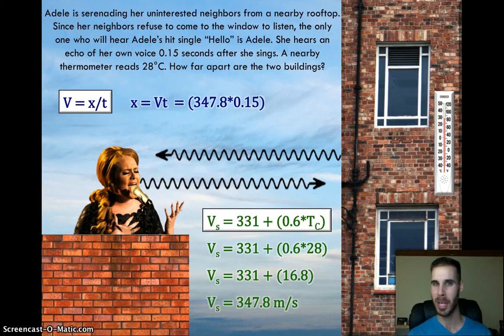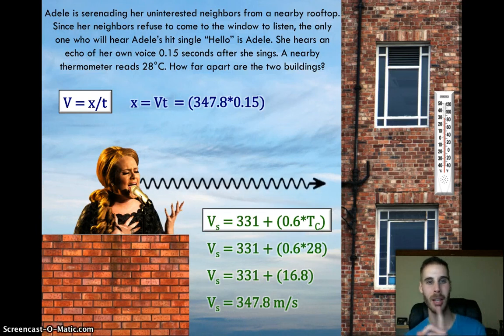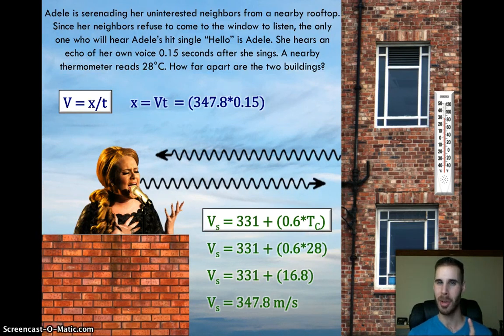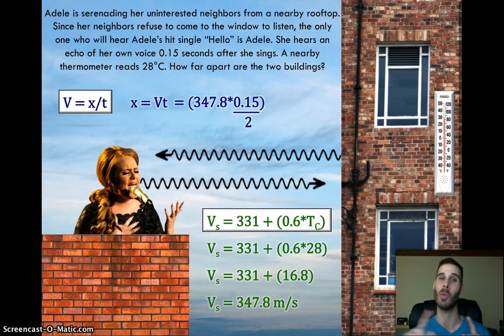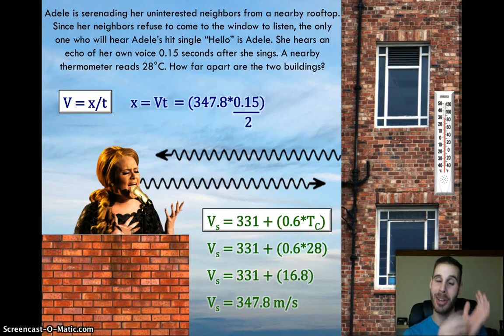The time measurement that we were given, the 0.15 seconds, that's the amount of time it took for the sound wave to travel from Adele to the building and then back from the building to Adele. So it's almost like the sound wave traveled double the distance of the distance between the two buildings. So we should account for that. The way we can account for that, actually there's a number of ways you could do it, but the way that we're going to do it this time is we're going to take that time measurement of 0.15 and we're going to cut it in half because half of that time is the amount of time it would take for the sound wave to just go in one direction, half the journey. So that's going to be the real number and now you can actually get out your imaginary calculator and go do-do-do-do-do. Go ahead, I'll wait.